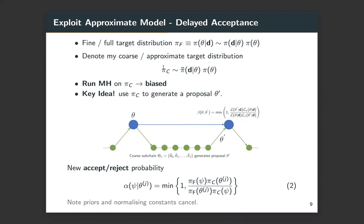I'm more interested in using the coarse distribution to generate a proposal rather than just replacing sampling entirely. The key idea is to use the coarse distribution as a proposal generator. Can we use this coarse approximate likelihood to generate proposals to our fine model? And is there a way that we can then accept or reject those proposals that come from our coarse model? We call this delayed acceptance, or multi-level delayed acceptance in our work - people also refer to it as surrogate transition methods.